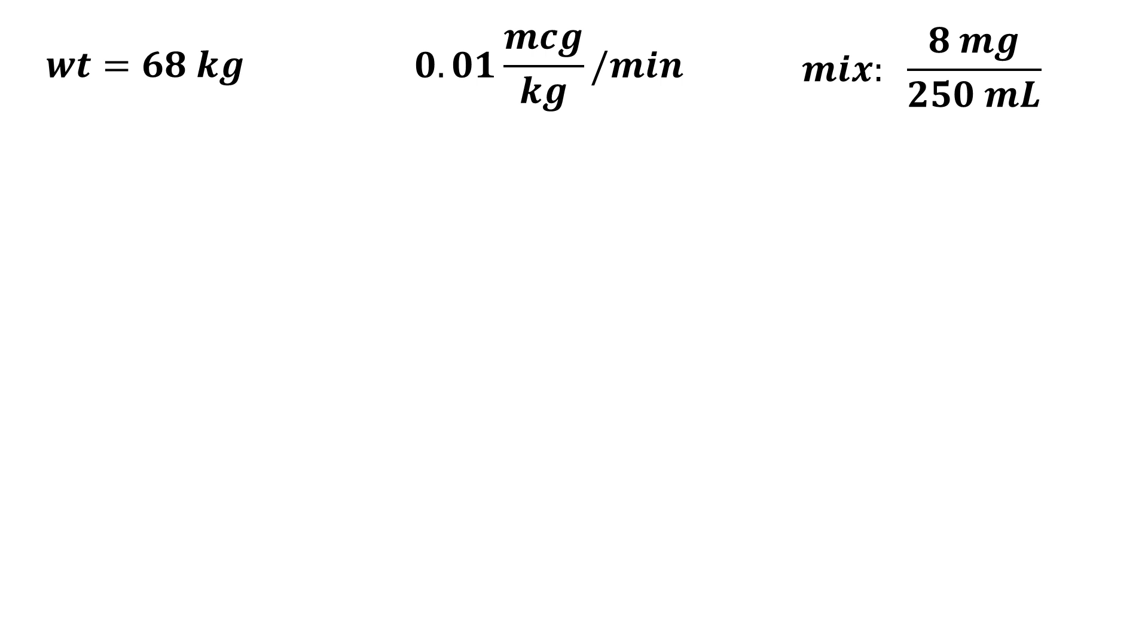So we start with our patient's weight which is the given information and that's 68 kilograms and we want to get to milliliters per hour. Our dose is going to start at 0.01 micrograms per kilogram per minute and this is a complex fraction but don't be scared by that because all we have to do is cross cancel the kilograms and now we're left with a standard fraction.